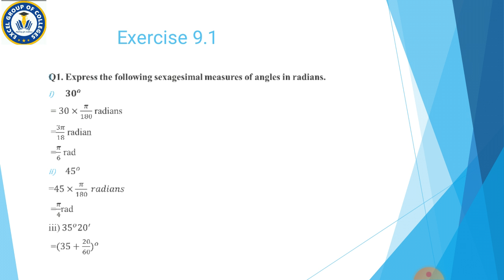Exercise 9.1 pe move karte hain. Question number 1: Express the following sexagesimal measures of angles in radians. Degree ko radian mein convert karna hai. First part: 30 degrees — 30 ko pi divided by 180 se multiply karenge. 30 × (π/180) = 3π/18 = π/6 radian. Second part: 45 degrees — 45 × (π/180), cutting karne ke baad aayega π/4 radian.